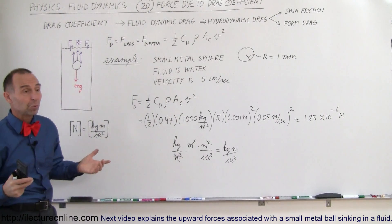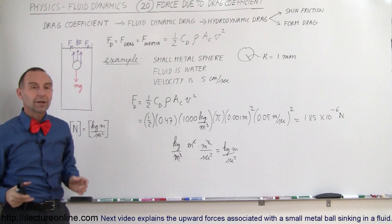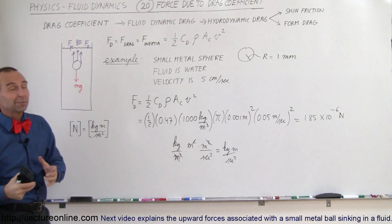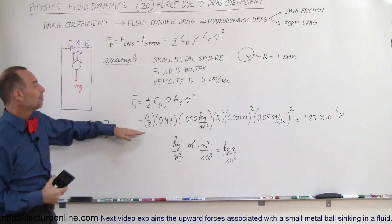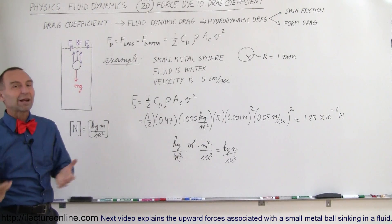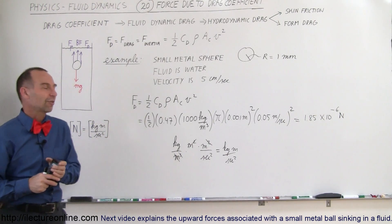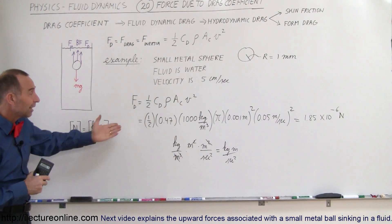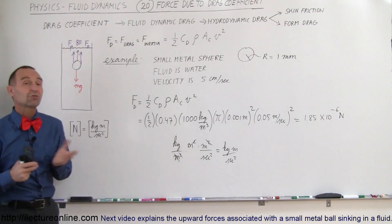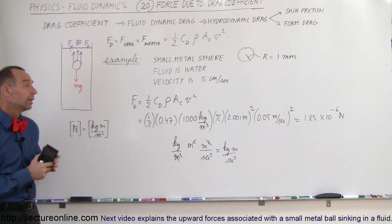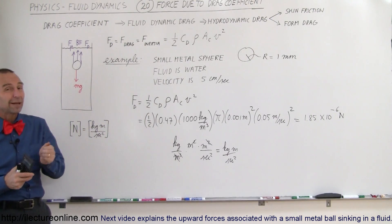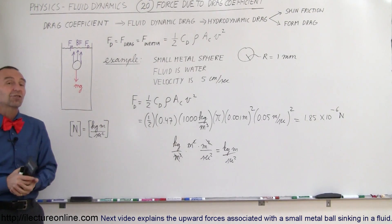And then we'll do an example where maybe we'll drop a big bowling ball into a bucket of water or a big object in water, and we'll see how the drag coefficient then compares to the viscosity, the force associated with the viscosity coefficient. Alright, but that's how we calculate the force associated with the drag coefficient. Fairly straightforward, and you can see how it does really depend on the velocity and on the cross-sectional area of the object.